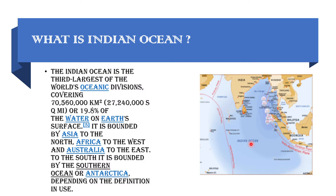On the north side of the Indian Ocean there's Asia, and India comes under Asia. Africa is to the west. Do you know where the west is? Is it this side or is it this side? Yes, you're correct — it's this side. Africa is right over here. It's not included in this picture but it's over here.